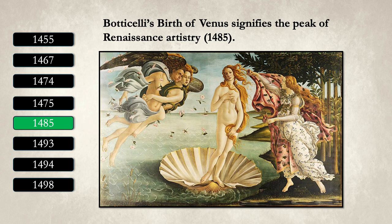In 1485, Botticelli's The Birth of Venus became an iconic symbol of Renaissance artistry, capturing the movement's peak. This masterpiece illustrates the revival of classical mythology and the celebration of human beauty and nature, themes central to the Renaissance.